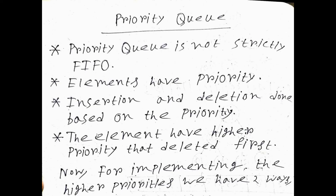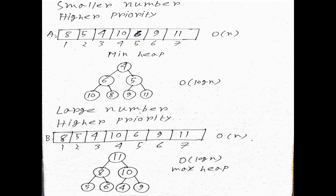Our target is finding the higher priority element. For implementing higher priority, there are two ways. First way: smaller number has the higher priority. Second way: larger number has the higher priority.